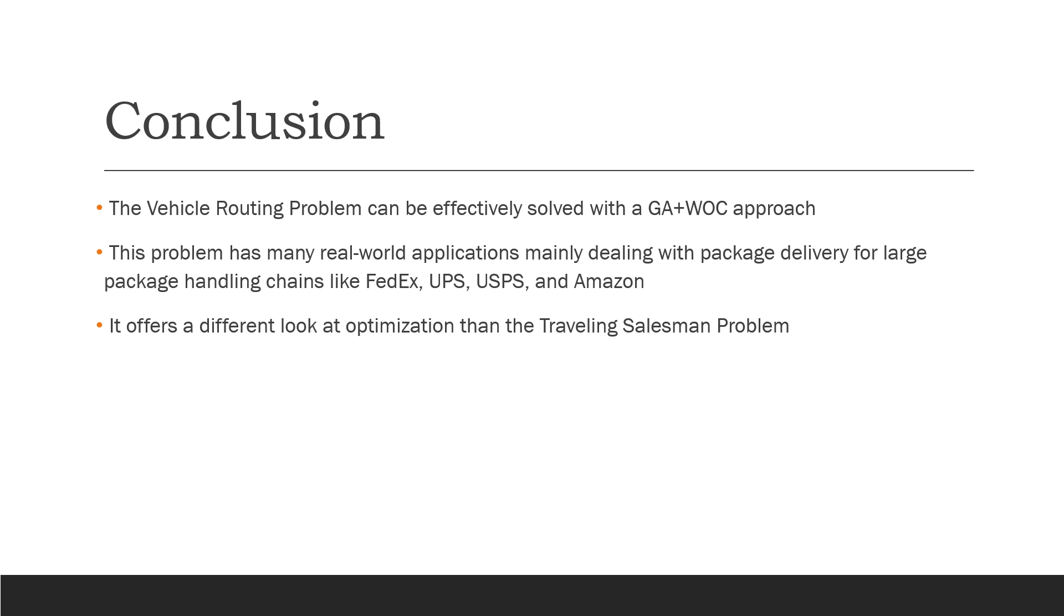In conclusion, the vehicle routing problem can be effectively solved with the genetic algorithm and wisdom of crowds approach, as displayed through all the data. This problem has many real-world applications, mainly dealing with package delivery for large package handling chains like FedEx, UPS, USPS, and Amazon. Though not only in that application, it could also be for wide-scale city-related traveling. Or, as I mentioned earlier with my job as a pizza delivery driver, it's interesting to me because of taking doubles or triples deliveries when we get busy. I think something like this could potentially be implemented into a point of sale system to ease the strain on drivers or in-store people to figure out what goes together. In that scenario, you have time, you have priority with the time, and you have location that's a big factor too.